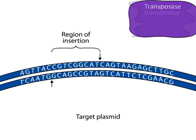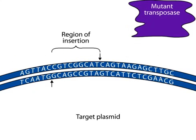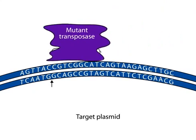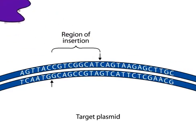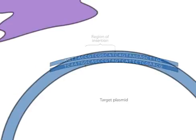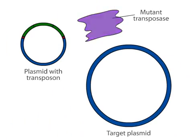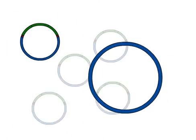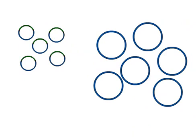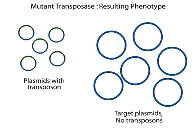A mutant transposase enzyme will not be able to initiate transposition. This results in each plasmid replicating in the bacterial cell without any transposon movement to the target plasmid.